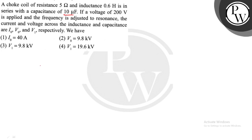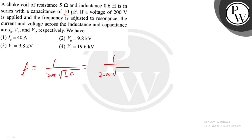We have an LCR circuit and it is at resonance. At resonance, the resonance frequency will be 1 by 2π into √(LC). That will be 1 by 2π into under root of L = 0.6 henry into C = 10 × 10⁻⁶ farad.